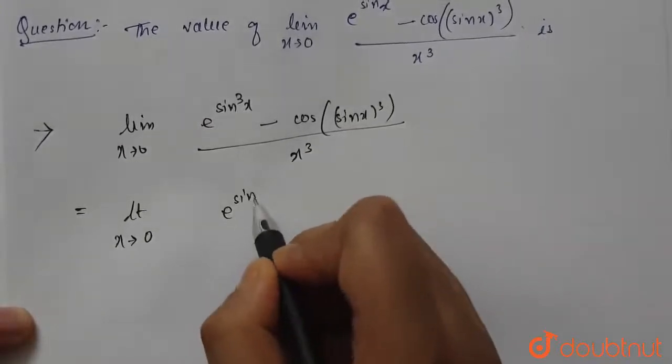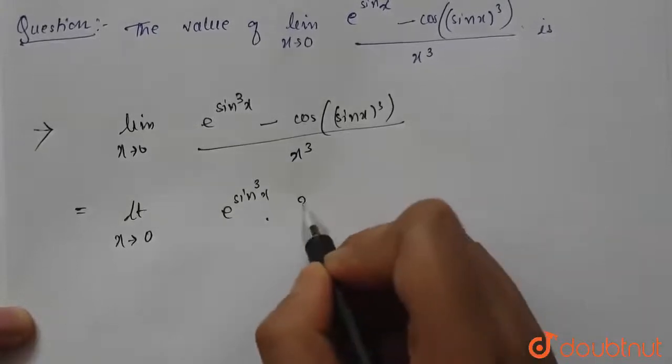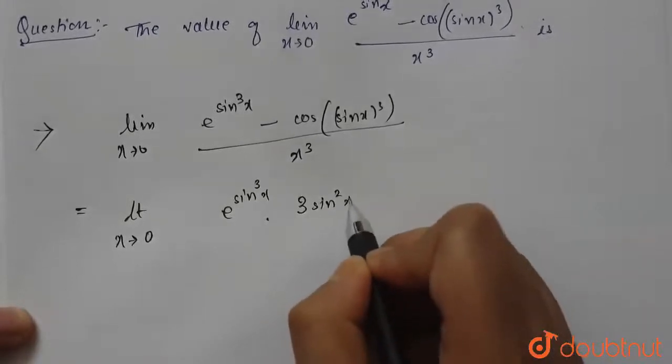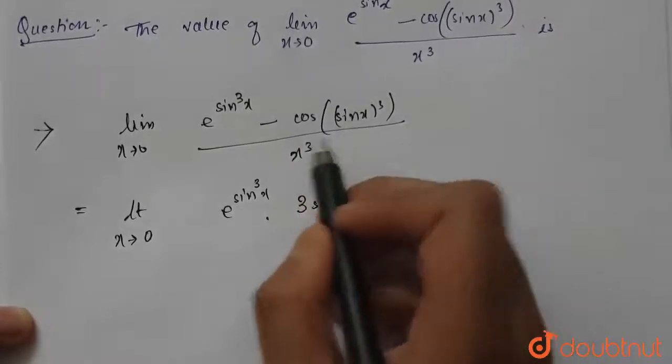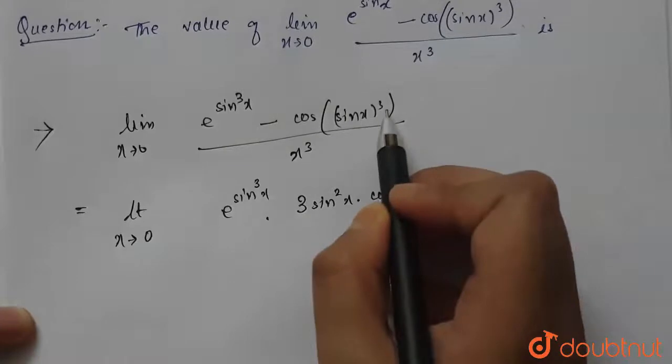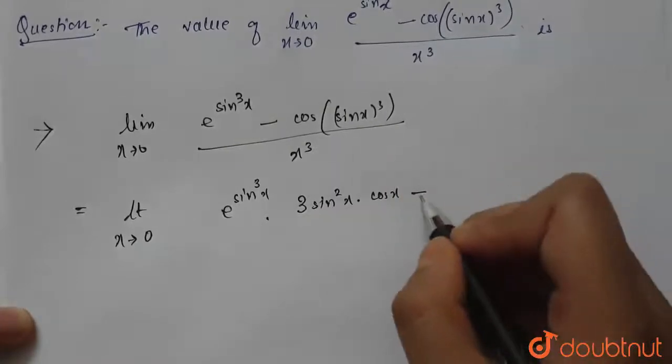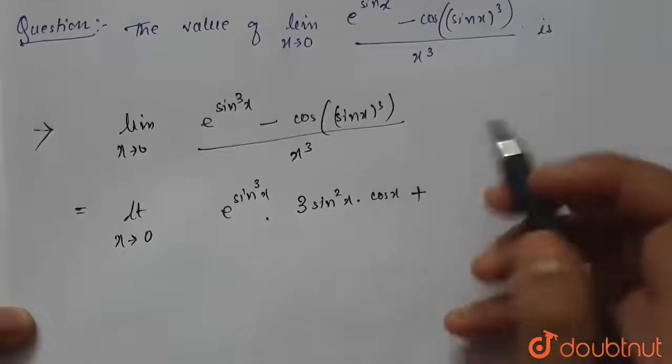3 sin²x · cos x, and minus—this part will be cos(sin x)³, so this will be minus minus plus, because d/dx of cos x equals -sin x, so minus minus plus